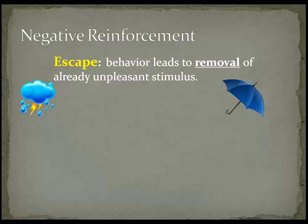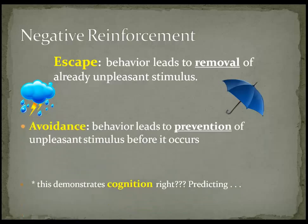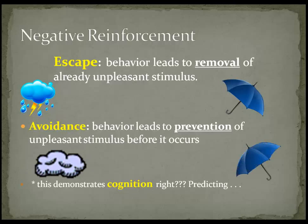Avoidance behavior is still negative reinforcement, but this type leads to the prevention of an unpleasant stimulus before it occurs. If you hear thunder and see lightning, and before it starts to rain you put up your umbrella and avoid getting wet, your behavior is followed by staying dry — removal of the unpleasant dampness. This demonstrates cognition — a prediction. This type of behavior shows that cognition does matter in operant conditioning.